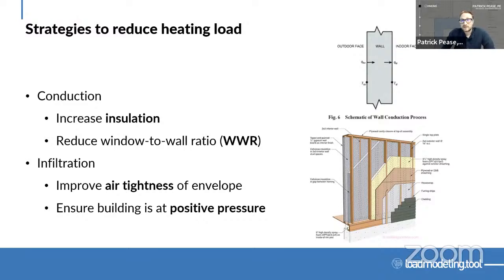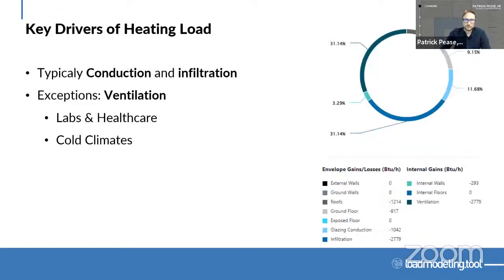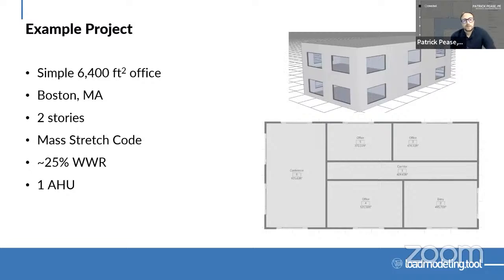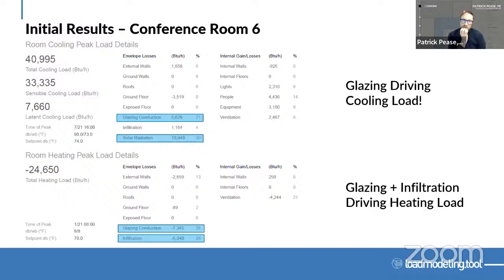I'll run through an example project. It's a very simple project just for this webinar — about a 6,000 square foot office located in Boston, a relatively cold climate. Just two stories, envelope to Massachusetts stretch code, about 25% window-to-wall ratio, and we're going to assume it's just one package unit for the whole project. Now we're going to look at some initial results — essentially just taking that initial project and running the load so we can understand what's driving it.